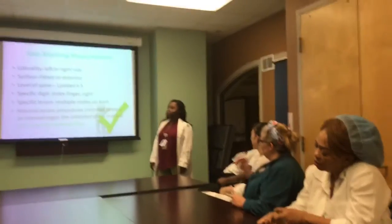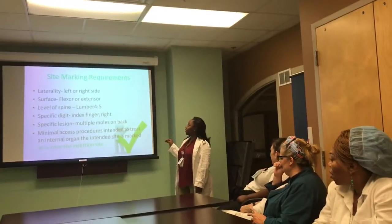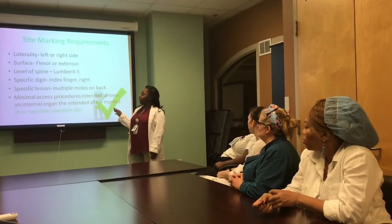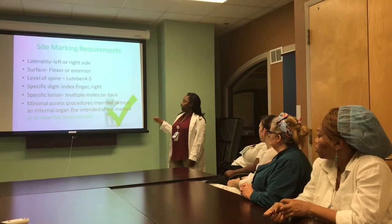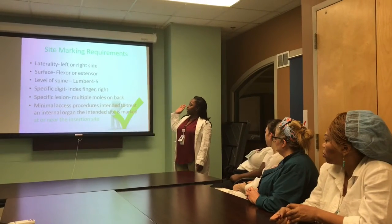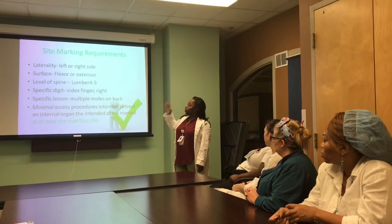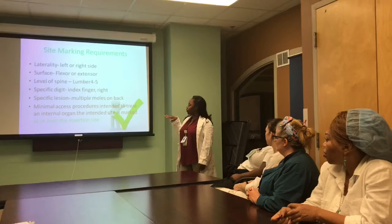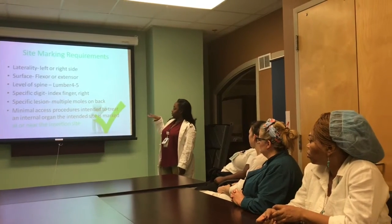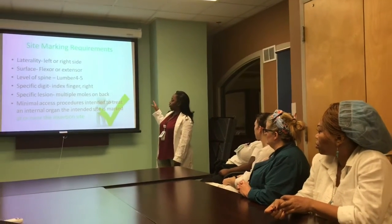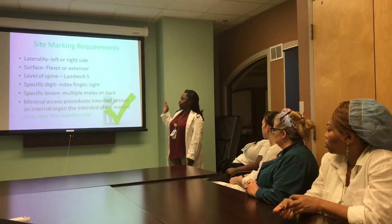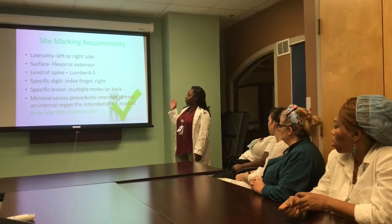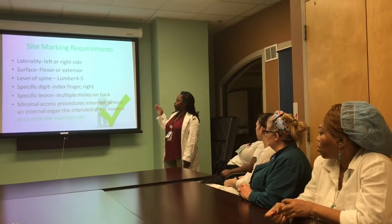Sight marking requirements. These are examples of sight marking requirements. For instance, if it's lateral, make sure you're stating the left or the right side. Making sure that it's flexed or extended. Making sure that the level of the spine is specified — for example, you can say lumbar 4-5.